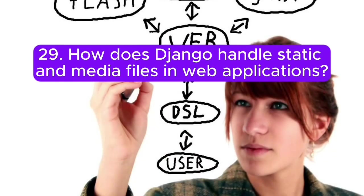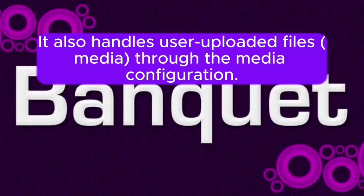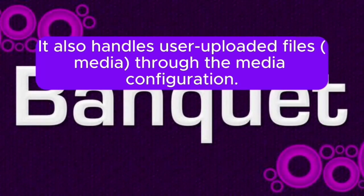Question 29: How does Django handle static and media files in web applications? Answer: Django provides a way to manage static files, such as CSS, JavaScript, and images with the static files configuration. It also handles user-uploaded files (media) through the media configuration.